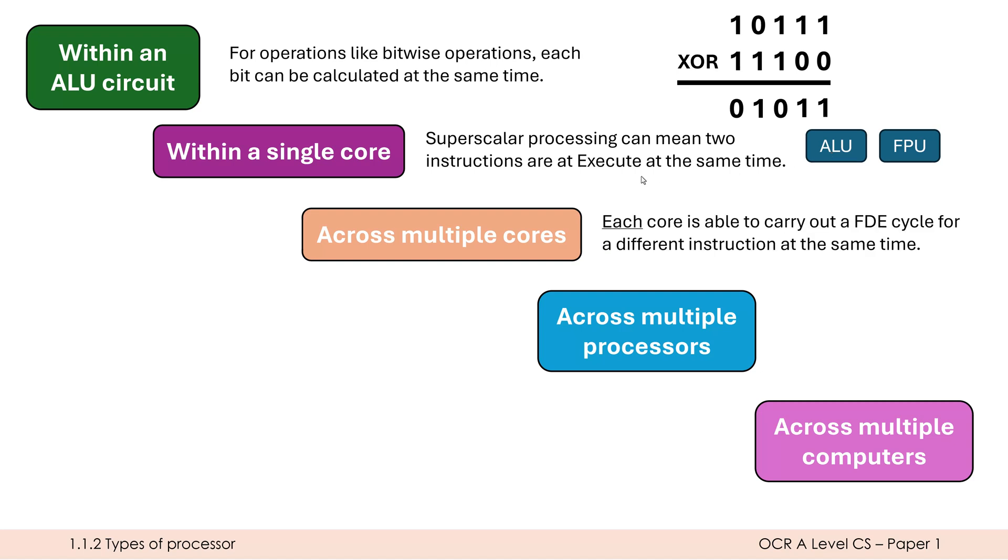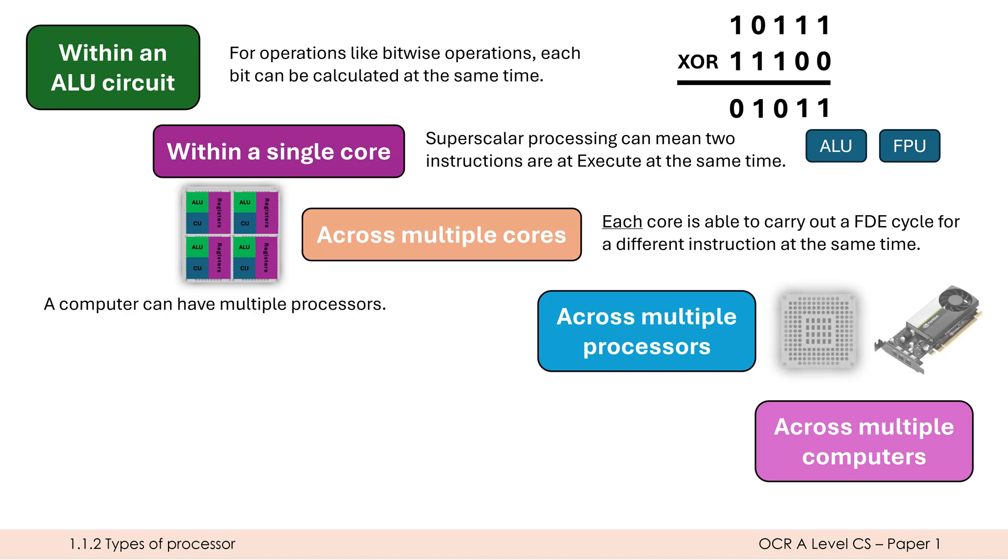The best examples of parallel processing come in once we start to add multiple cores to our CPUs, because each core is able to carry out independently an FDE cycle for different instructions. If I've got four cores on a CPU, I can do up to four instructions simultaneously. As we looked at in the last video, we often have multiple processors in a computer, most notably a CPU and a GPU. Each is able to execute either different programs or different parts of programs.